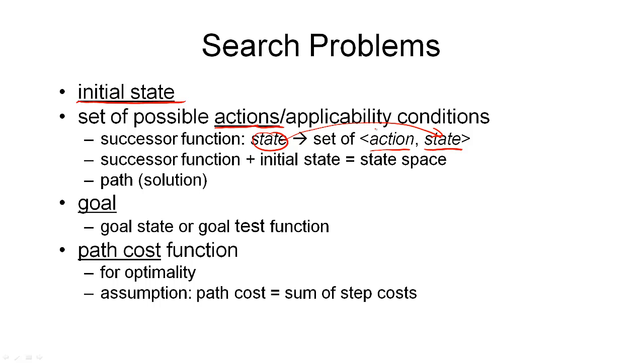The third component of a search problem is the goal. This can be either an individual state, in which case we have just one unique goal state, or in general we can have a function that tests whether a given state is a goal state or not, which allows us to have many different goal states. A solution to a search problem is simply a path in the state space from the initial state to a goal state.